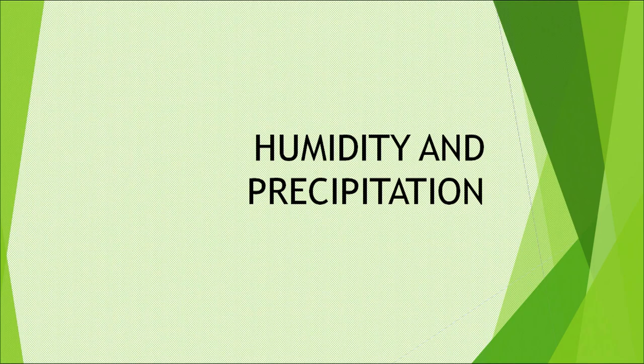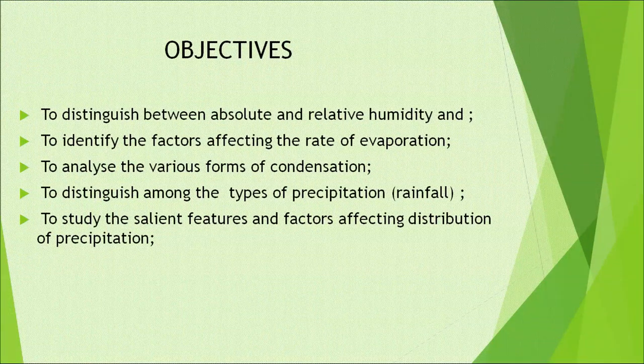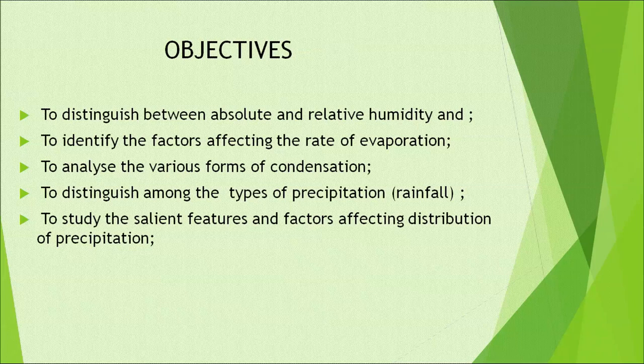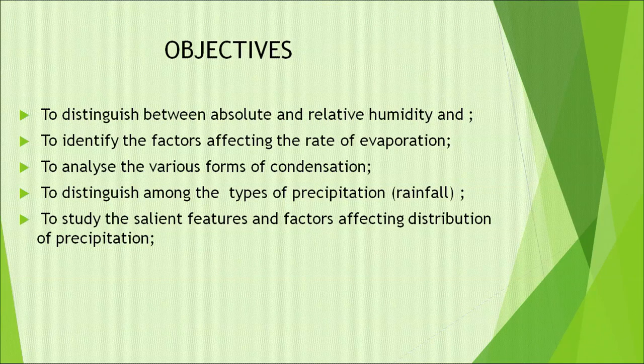Hello learners, welcome to NIOS. Today we will discuss the topic humidity and precipitation. Our objectives are to distinguish between absolute and relative humidity, to identify the factors affecting the rate of evaporation, to analyze the various forms of condensation, to distinguish among the types of precipitation, i.e. rainfall, and to study the salient features and factors affecting distribution of precipitation.